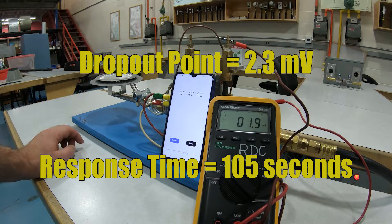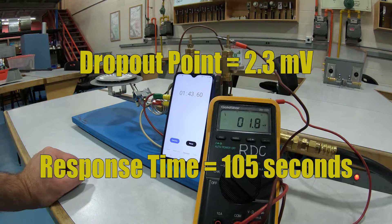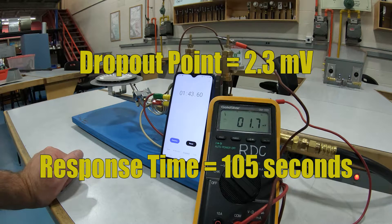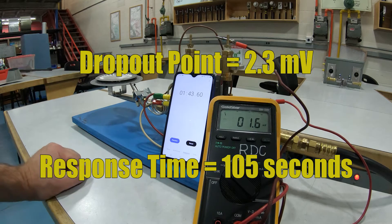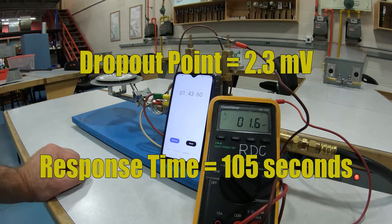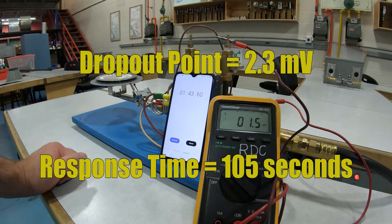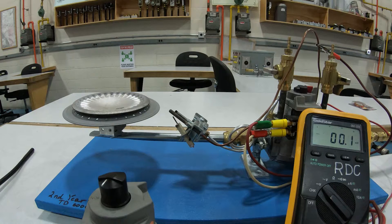So we will just say that we were at a minute and 42 seconds or a minute and 43 seconds. We have up to three minutes, which is 180 seconds, so that means the response time is good. Now the dropout point, which was at 2.3 millivolts, we save that for the next test.